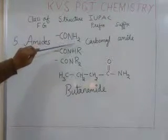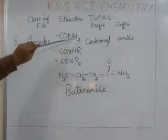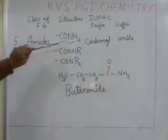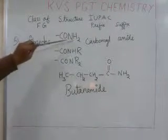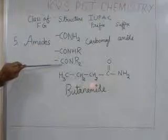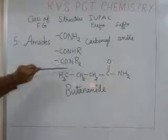So, friends, see, first one, when any alkyl group replaces one of the hydrogen atoms, it will form CONHR. When two alkyl groups replace both the hydrogen atoms, then it will become CONR2.